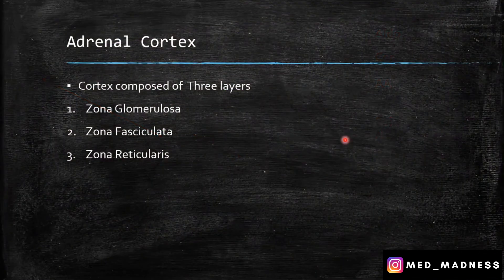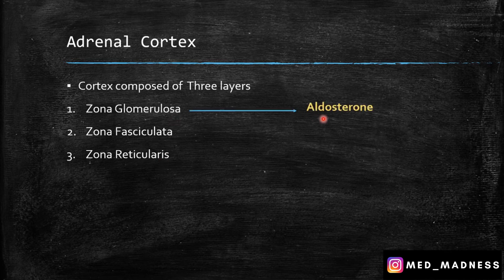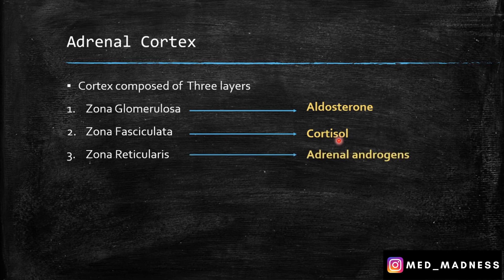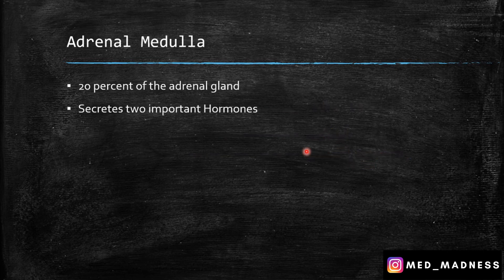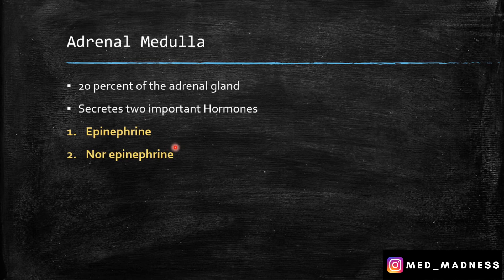Now this is a recall slide — you can pause the video and recall yourself. The cortex is composed of three layers: zona glomerulosa, fasciculata, and reticularis. The glomerulosa secretes aldosterone, fasciculata secretes cortisol, and reticularis secretes adrenal androgens. The adrenal medulla makes up about 20% of the adrenal gland and secretes two important hormones — epinephrine and norepinephrine — which play a very important role at times of stress.